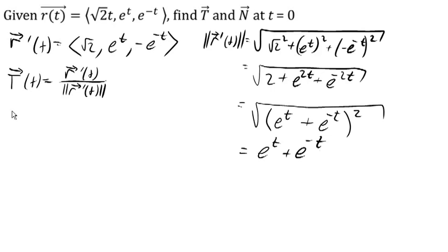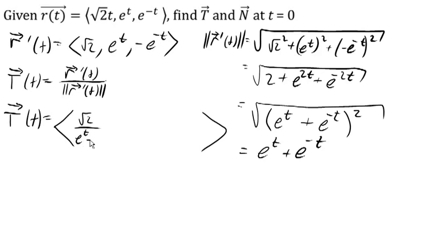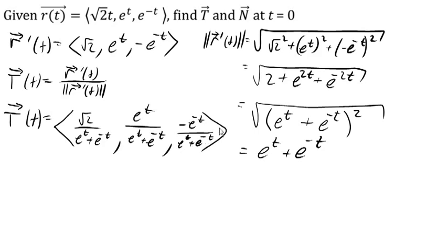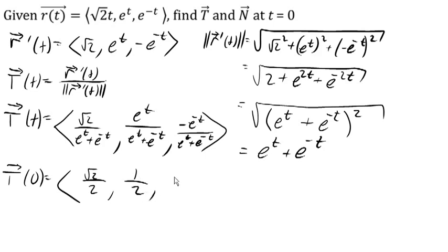So our unit tangent vector will be the original tangent vector divided by this magnitude, meaning we divide each component: root 2 over (e to the t plus e to the negative t), e to the t over (e to the t plus e to the negative t), and negative e to the negative t over (e to the t plus e to the negative t). Evaluating at t equals 0, each denominator becomes 1 plus 1 equals 2, giving us the vector: root 2 over 2, 1 over 2, negative 1 over 2.